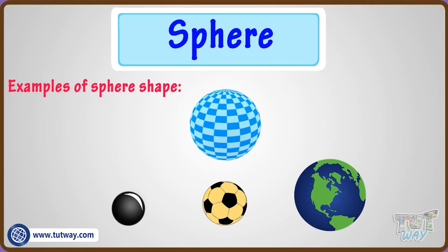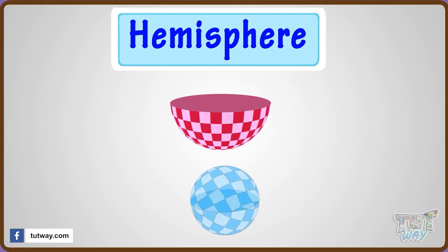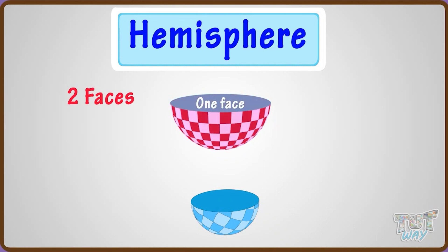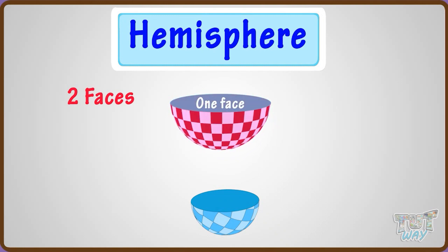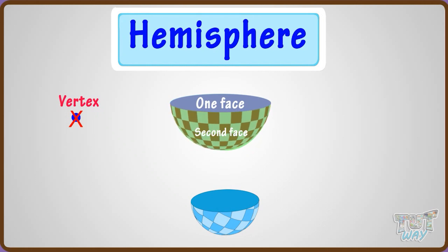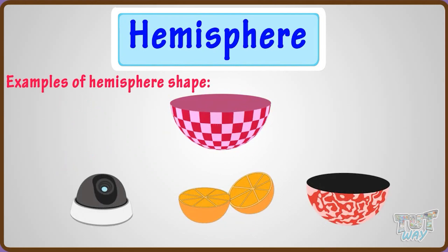Now let's learn another shape — Hemisphere. Hemisphere refers to half of a sphere. It has two faces: one is a flat surface which is completely round, and the other is a curved surface. It has no vertex and it has one round edge. These are a few objects which are hemispherical in shape.